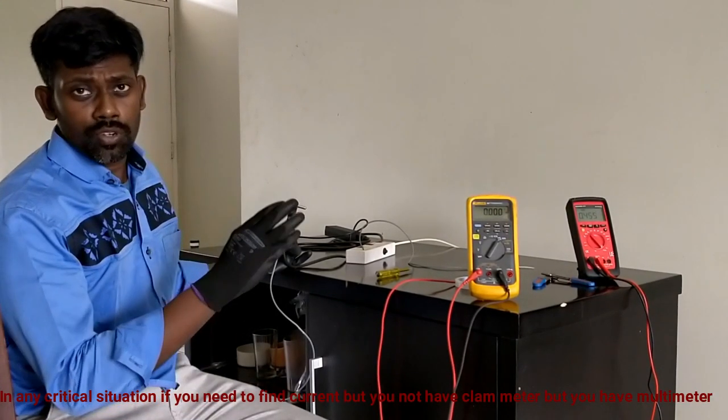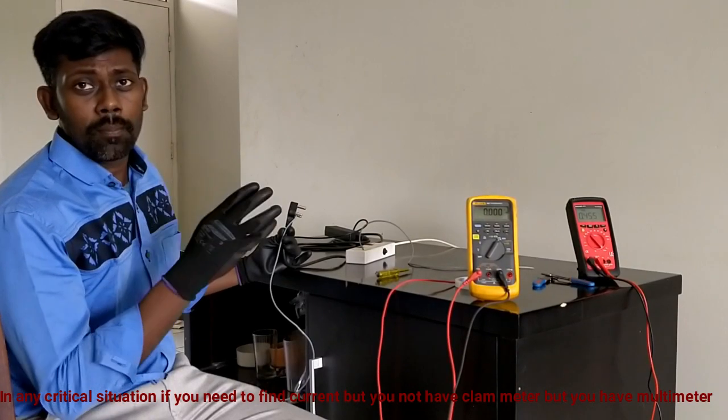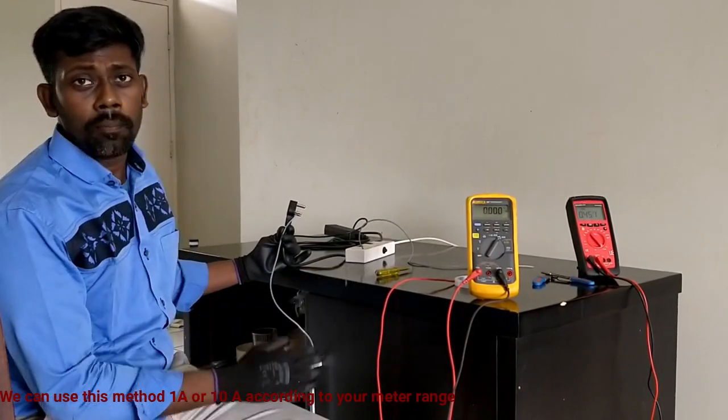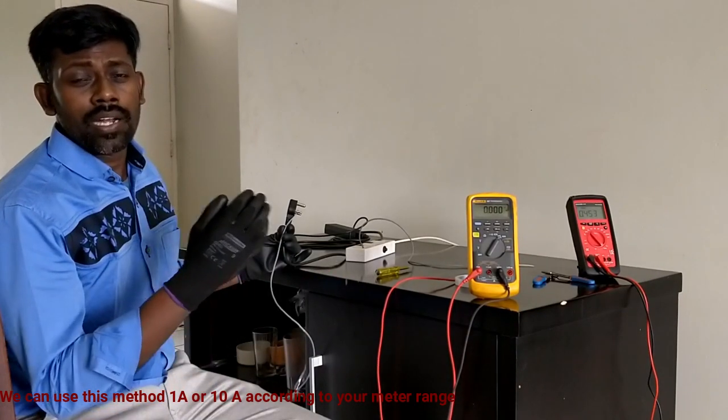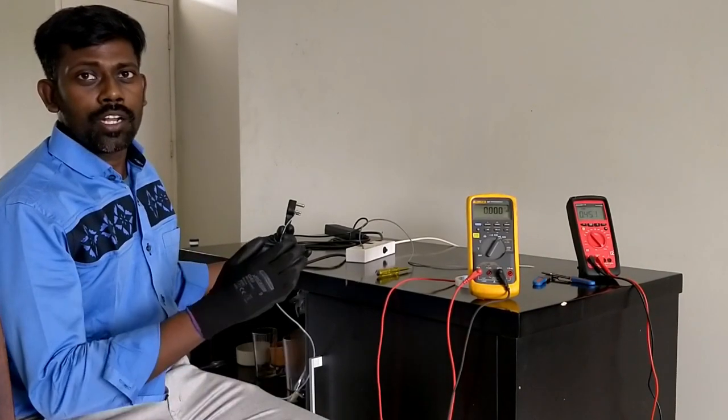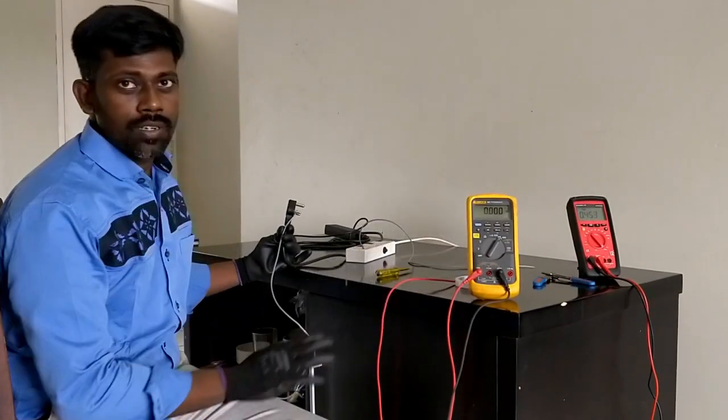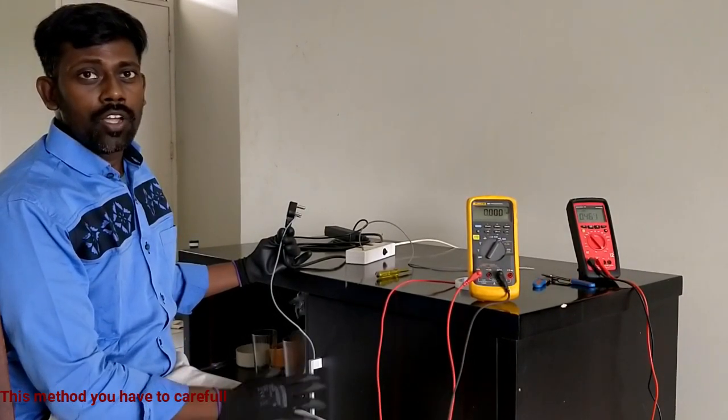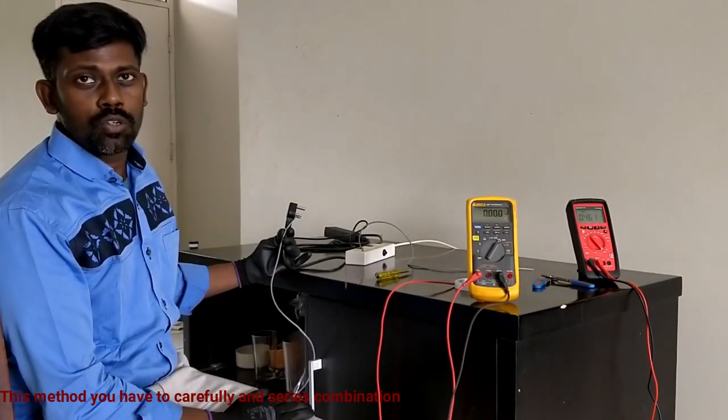But in any critical situation if you are not having a clamp meter or any other device, we can use this method to find up to 1 amp or 10 amp maximum. Some meters will have 10 amp ranging. According to your range you can use it. But this method you have to be careful and you have to use a series combination to measure this.